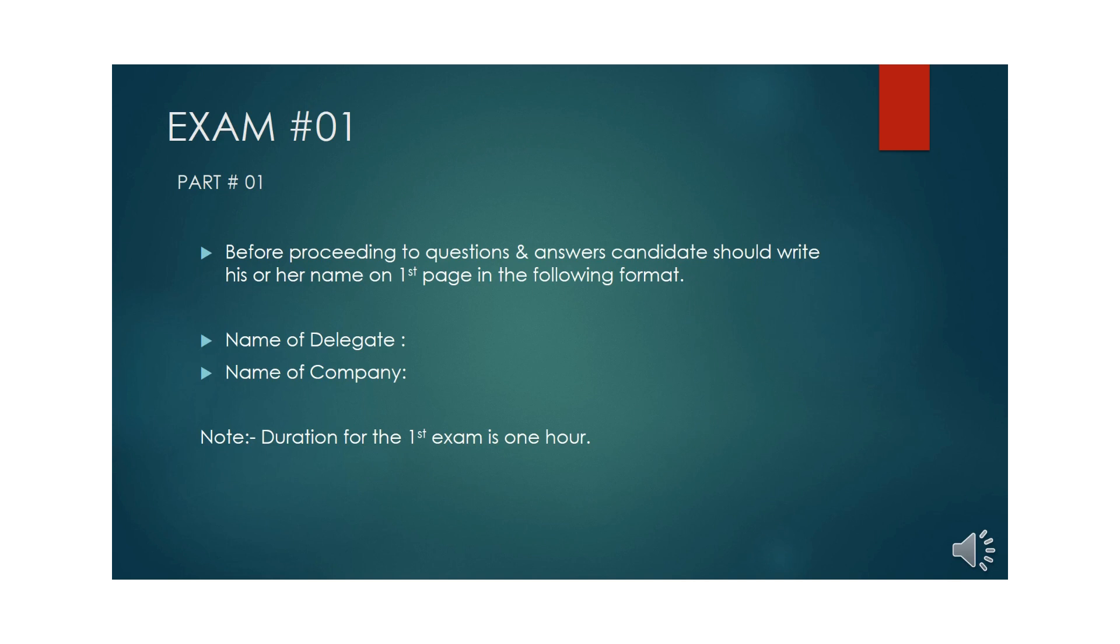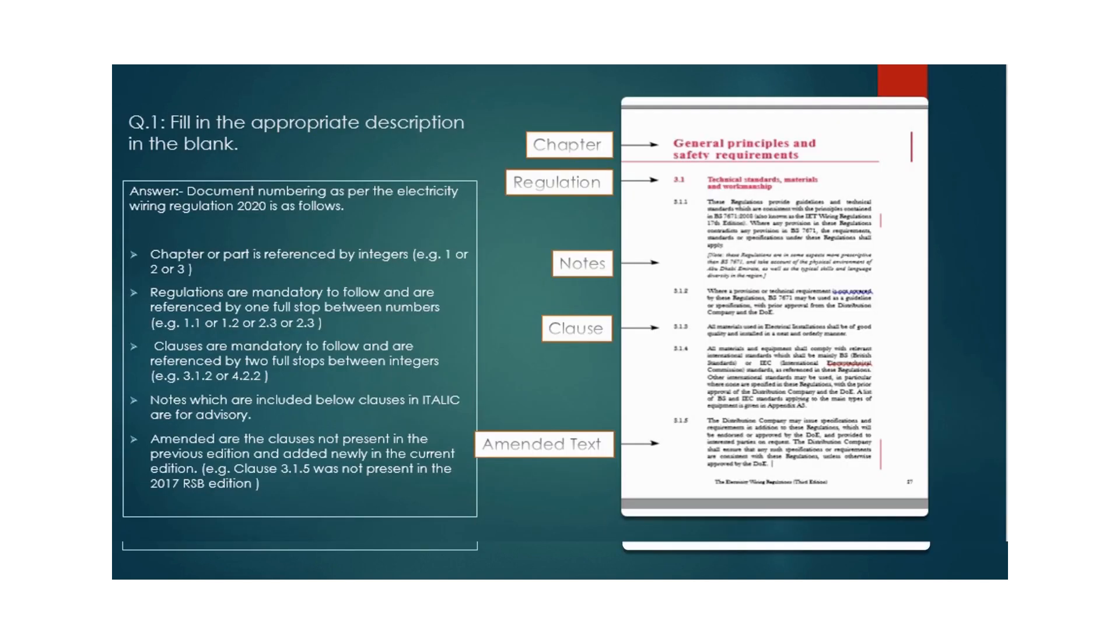Our first question is about recognizing chapter, regulation, notes, clause, and amendment text. Professionals should know about document numbering in Electricity Wiring Regulations 2020. The question may look like this: there will be a screenshot from any page of the electricity wiring regulation with empty boxes, and you must write which one is chapter, regulation, notes, clause, and amendment text.